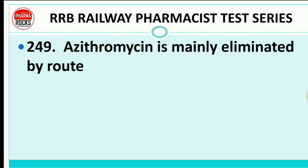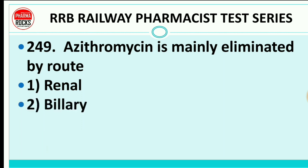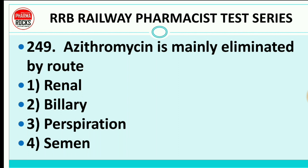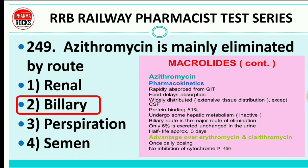Question 249: Azithromycin is mainly eliminated by which route — renal, biliary, perspiration, or semen? The right answer is the biliary route. Azithromycin is a macrolide antibiotic. Other macrolides include clarithromycin and streptomycin. It is rapidly absorbed from the GIT, food delays absorption, it is widely distributed, protein binding is 51%, it undergoes hepatic metabolism, and the biliary route is the major route of elimination.